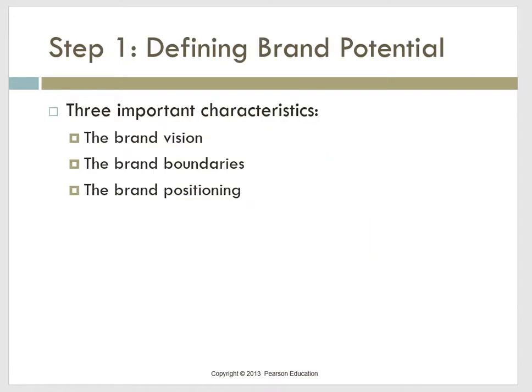Defining brand potential involves three important characteristics: brand vision, brand boundaries, and brand positioning. Articulating the brand vision — management's view of the brand's long-term potential — is influenced by how well the firm recognises current and possible future brand equity. Many brands have transcended their initial market boundaries, and marketers sometimes adopt a sequential approach to extending their brand, gradually expanding brand meaning.